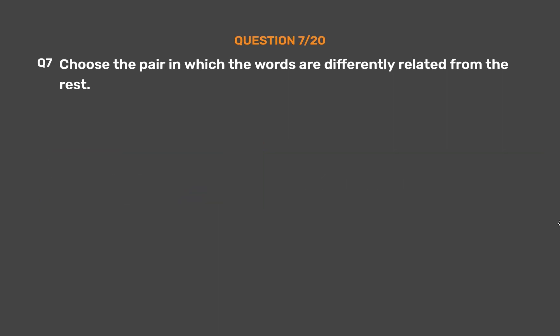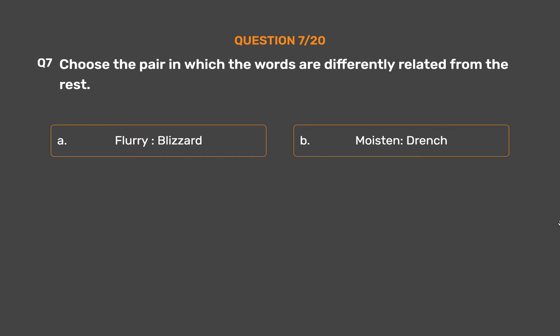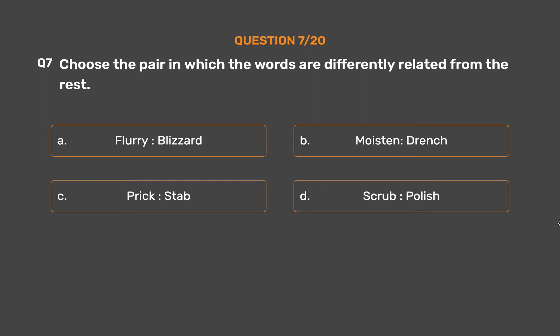Question number 7. Choose the pair in which the words are differently related from the rest. Option A: Flurry, Blizzard. Option B: Moisten, Drench. Option C: Prick, Stab. Option D: Scrub, Polish.